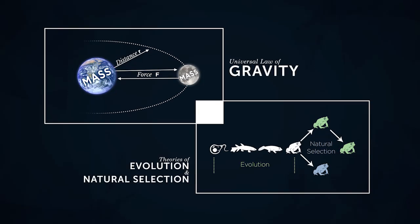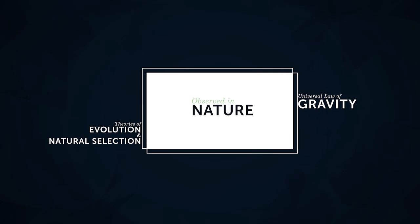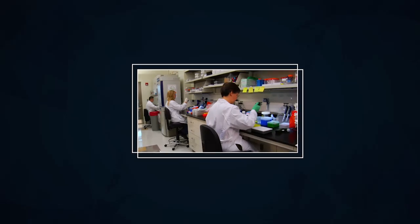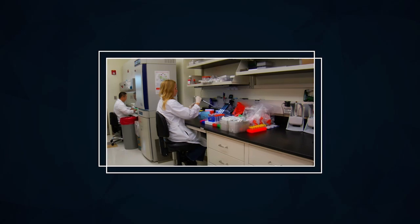Both scientific theories and scientific laws describe something that has been observed in nature. They both require many observations and experiments and they both must be accepted by the majority of the scientific community.